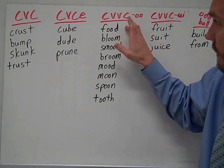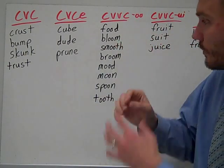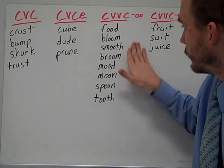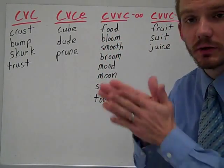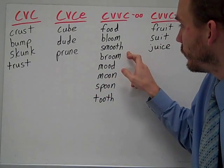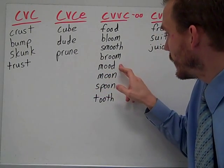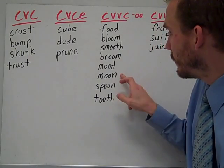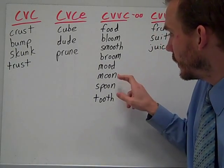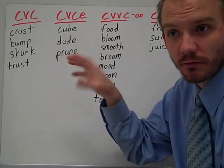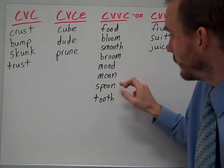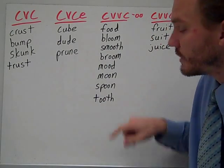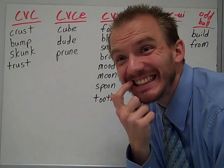In terms of the definitions: food is the stuff you eat. Bloom — like a flower blooms when it opens up. Smooth is how something might feel. Vroom is what you use to sweep the floors. Mood is how you feel, whether you're happy or sad. Moon is what circles the earth — the sun reflects off it and creates light at night. Spoon is something you eat food with — you scoop it out. And tooth — like these things.